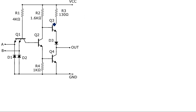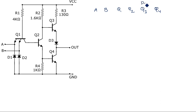Now let us see the operation of this TTL NAND gate using the truth table. There are two inputs A and B, and four transistors Q1, Q2, Q3, and Q4. The four input combinations are: 00, 01, 10, and 11.